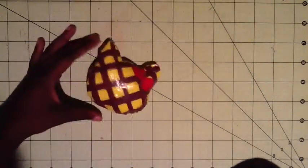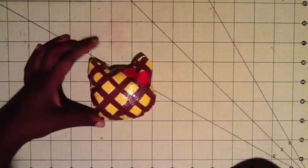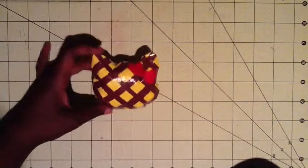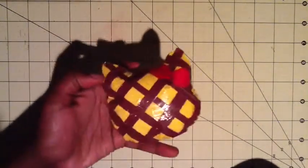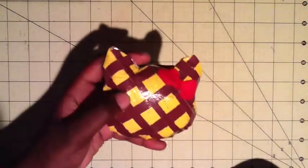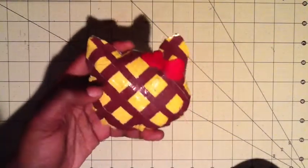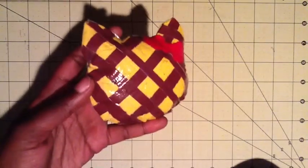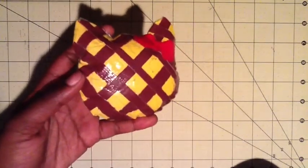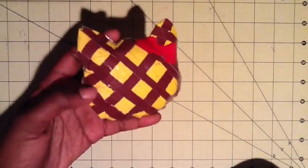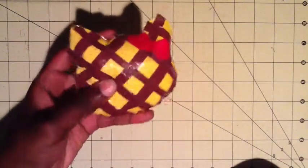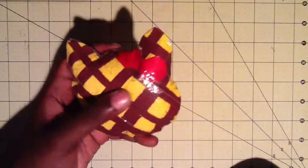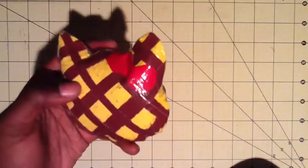And this one is a Hello Kitty waffle squishy. As you can see, it has brown and yellow. It actually looks brighter on camera. It looks more detailed in person, so sorry you can't see that.